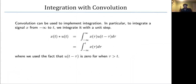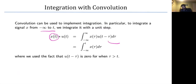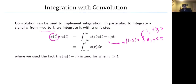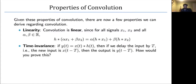Convolution can also implement integration. If you take x(t) and convolve it with u(t) (the step function), you get the integral of x from −∞ to t. You can prove this at home by exploiting the fact that u(t − τ) = 1 when t > τ and 0 when t < τ, which effectively limits the integration range.